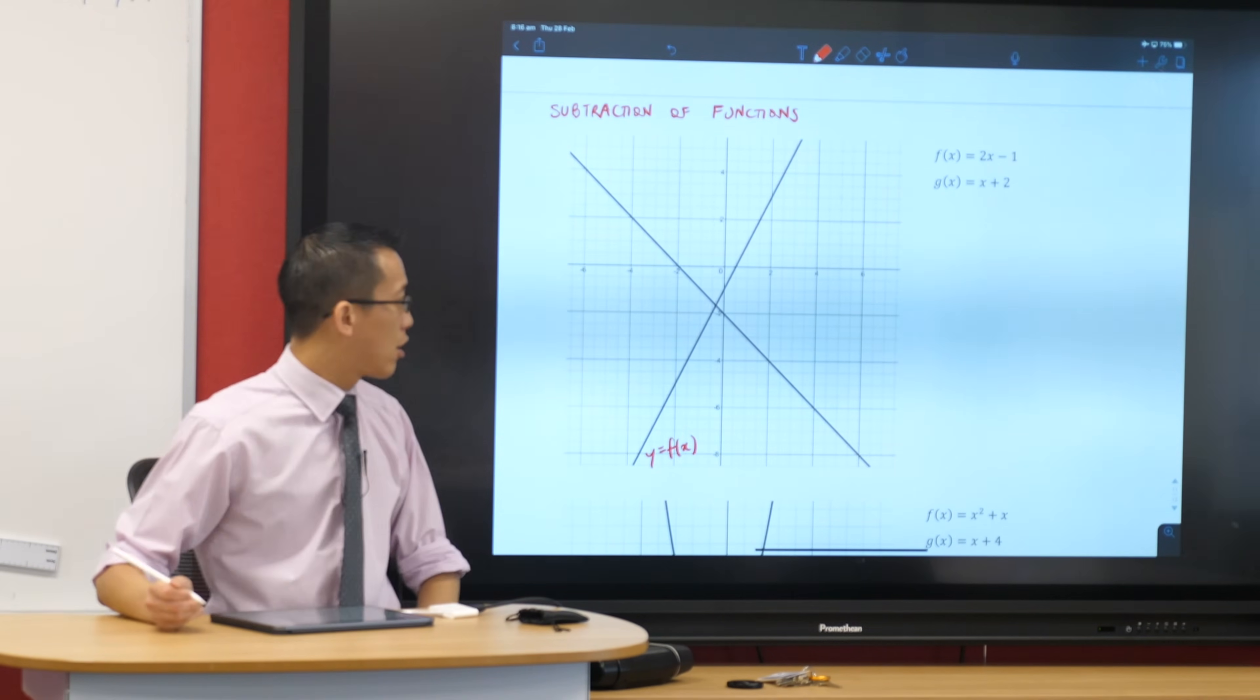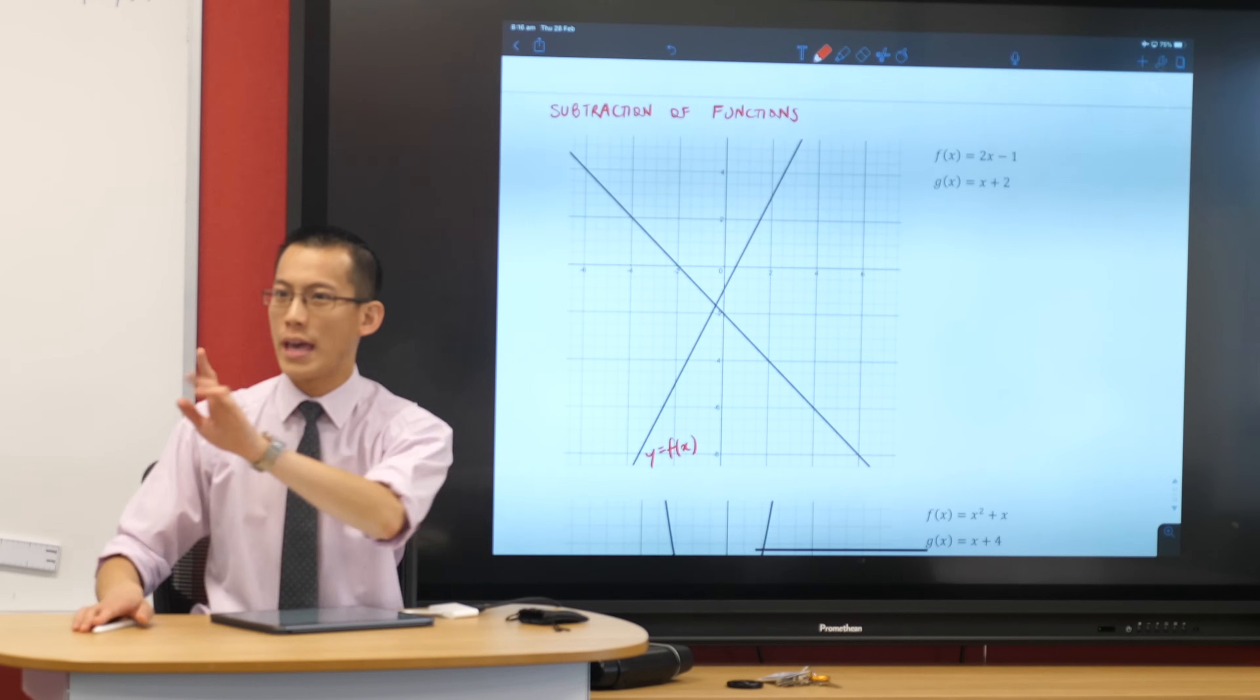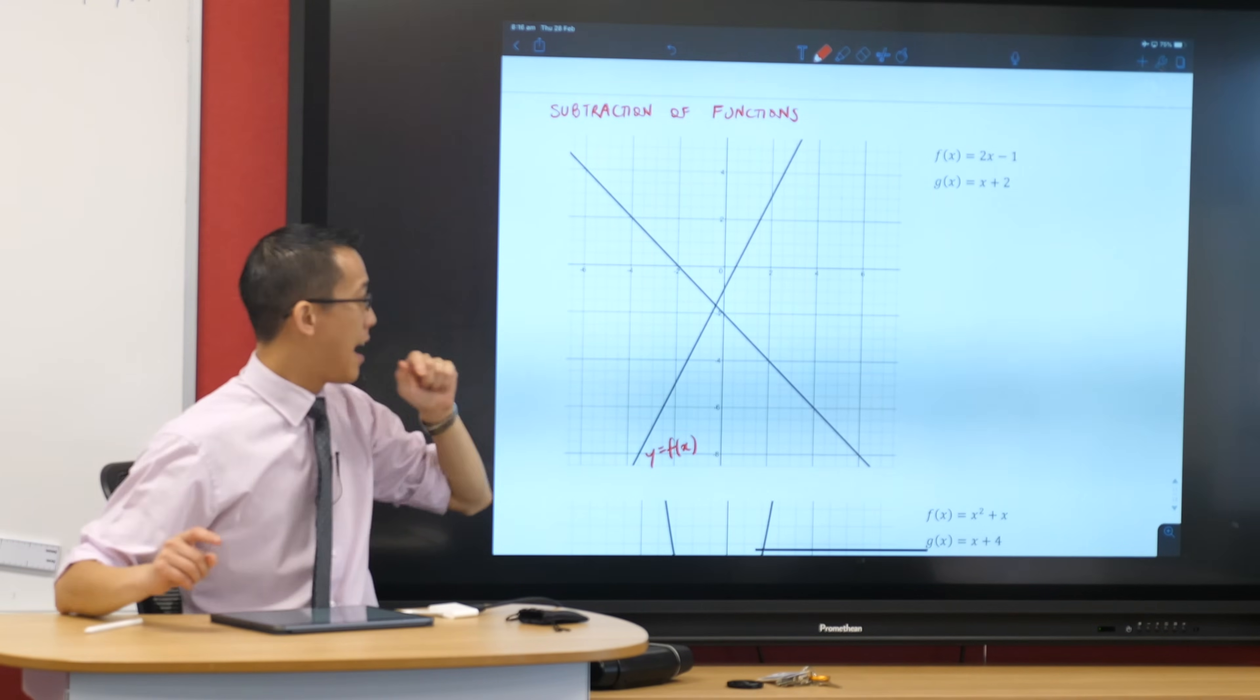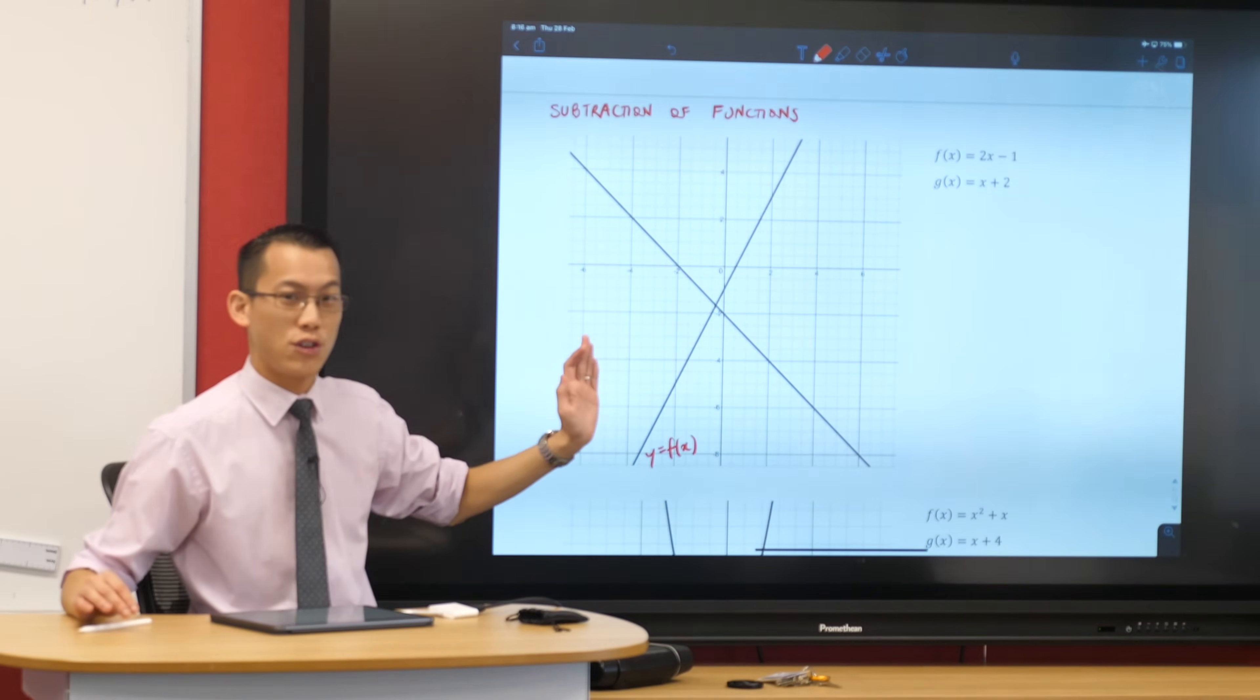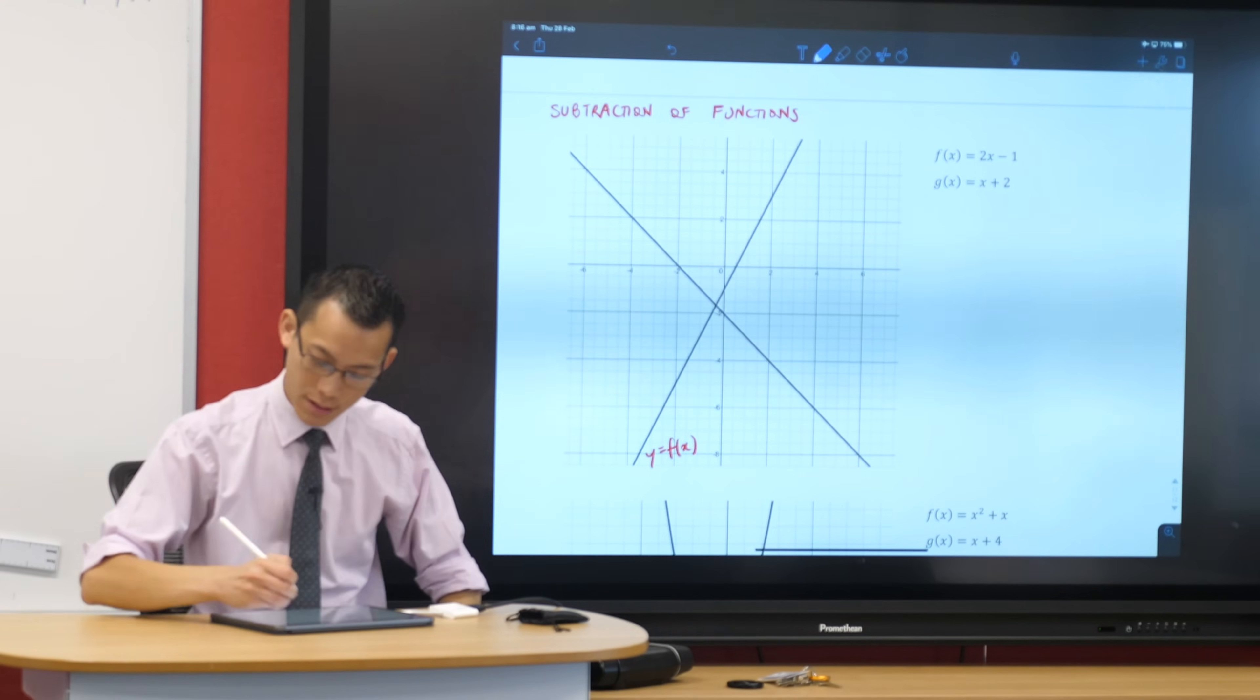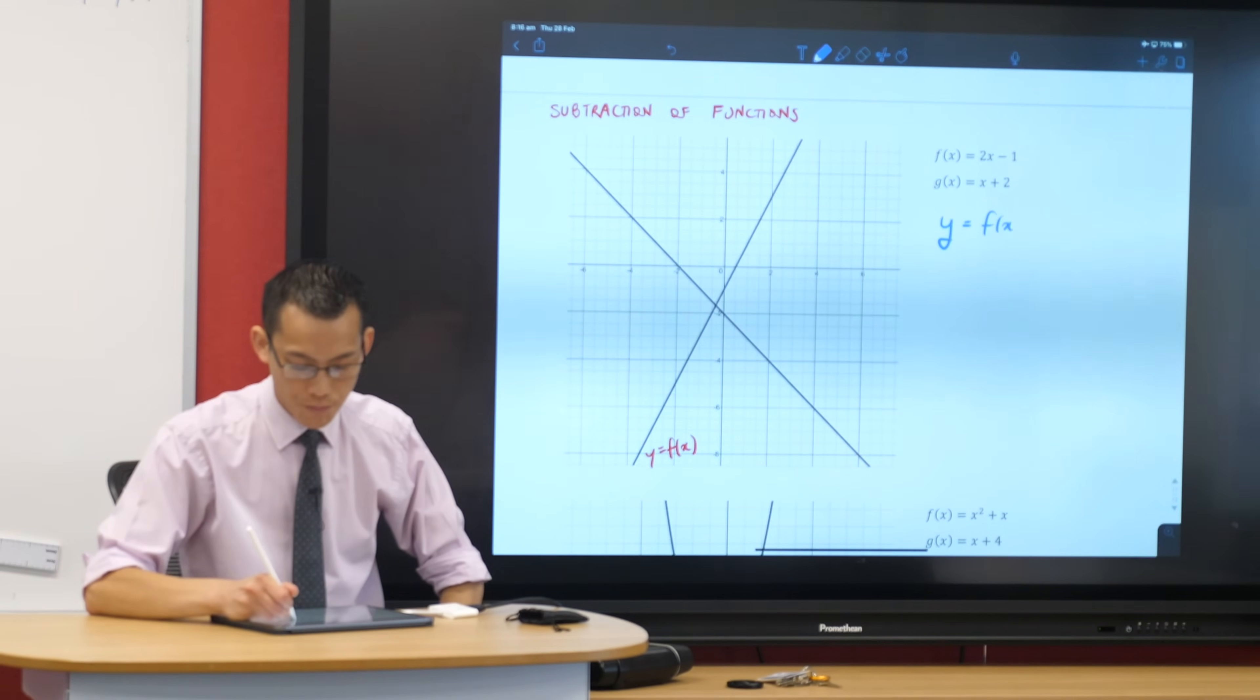But then you might notice, hold on a second, that other one is not g of x, is it? Because x plus 2, we have language to describe this. It's an increasing function because gradient is positive, positive one. And that's not increasing, that's decreasing. Now, the reason why I've given you this graph instead of g of x is because what we're going to graph is not f of x plus g of x. This is subtraction of functions. We are going to graph f of x minus g of x.